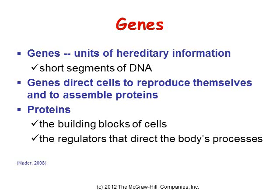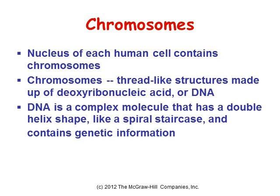Proteins are the building blocks of cells and the regulators that direct the body's processes. The nucleus of each human cell contains chromosomes, which are thread-like structures made up of DNA. DNA is a complex molecule that has a double helix shape — like a spiral staircase — and it contains genetic information.